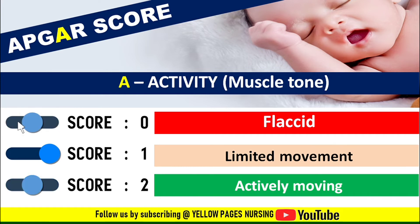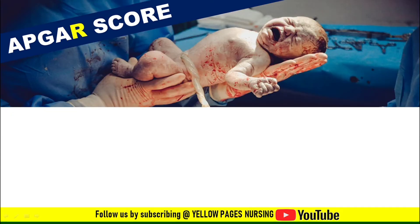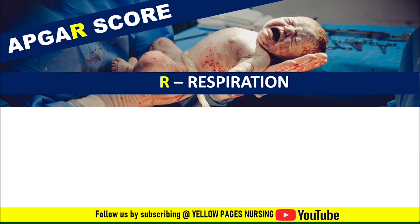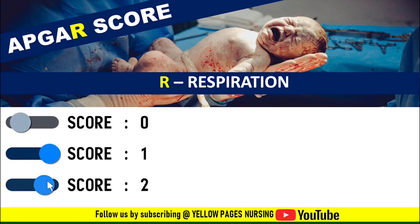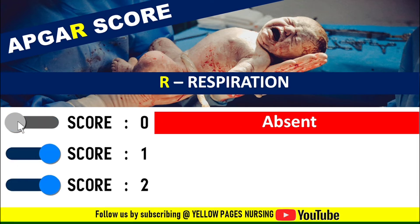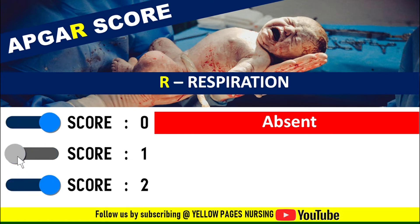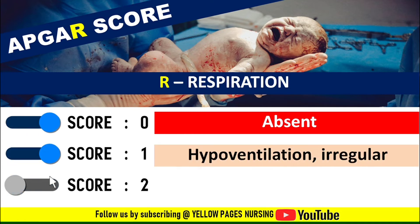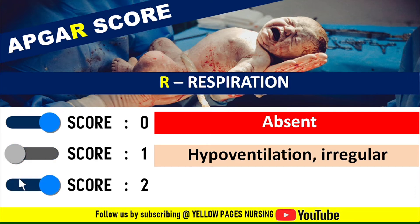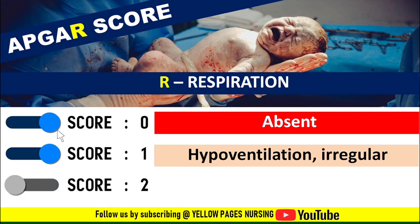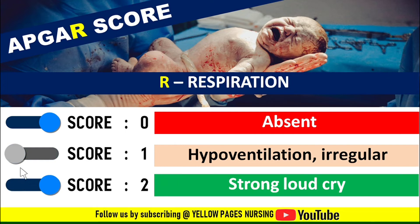Next is Respiration, or breathing effort. Score 0 indicates absence of respiration. Score 1 indicates hypoventilation or irregular breathing, where respirations are slow or irregular. Score 2 indicates a strong, loud cry, where the infant cries well.